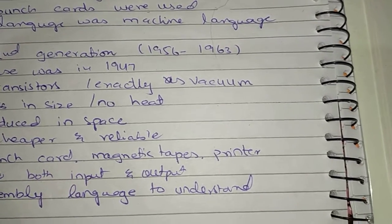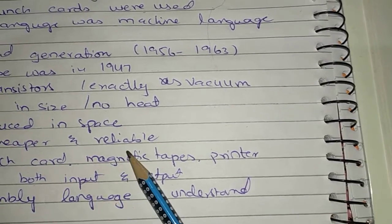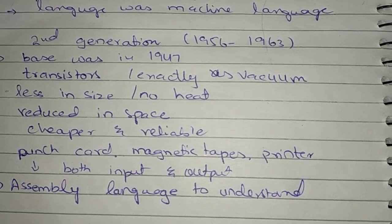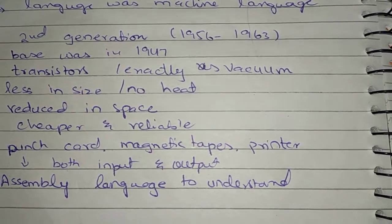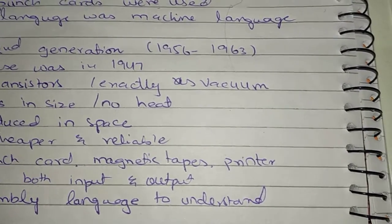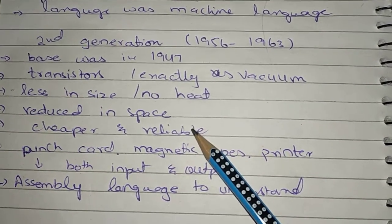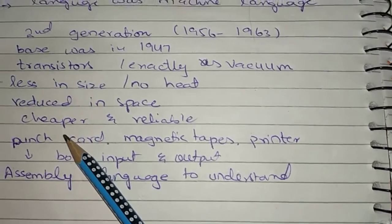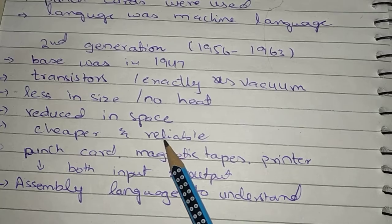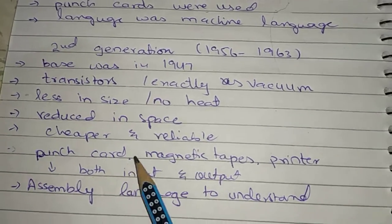They also got cheaper. For example, when mobile phones came into the world in the beginning, as they were enhanced with more features, they became cheaper. The same happened with computers — the more people used them, the cheaper they got. So second generation computers were cheap and reliable because transistors can be replaced easily. Input was still done using punch cards.